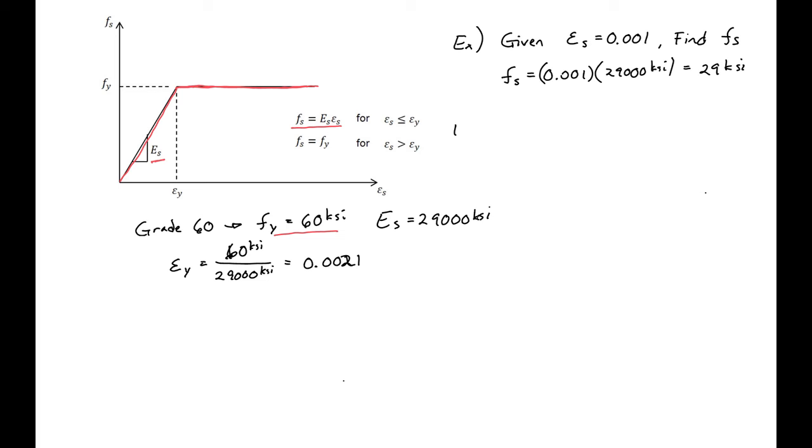So we can work the other way as well. So let's say that we're given that we have 15 KSI of stress in our steel and we want to find the strain at this point.